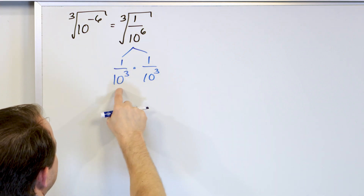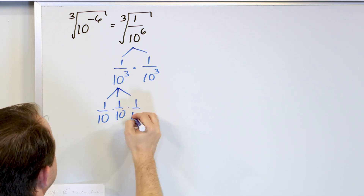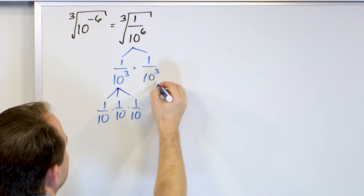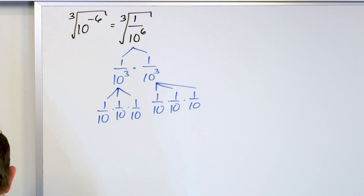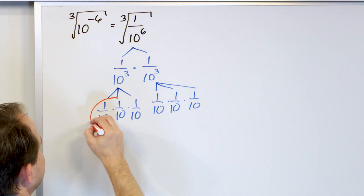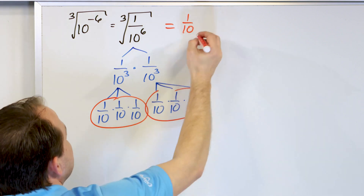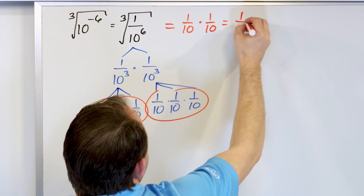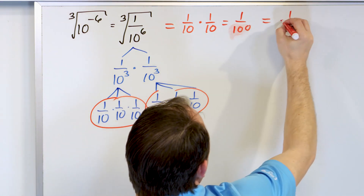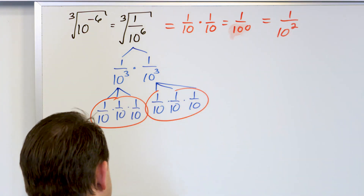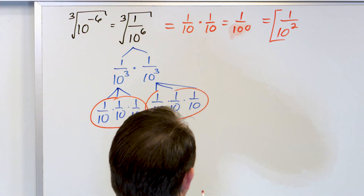So I see 1 over 10³ is 1/10 times 1/10 times 1/10, and the other factor is also 1/10 times 1/10 times 1/10. I'm looking for triplets for the cube root — here's one triplet and here's another. They each count once, so pulling them out gives 1/10 times 1/10, which is 1/100. You can also write it as 1 over 10 squared. Don't write it as 1/20 — they're multiplied, not added.